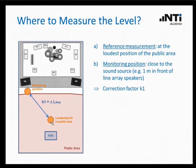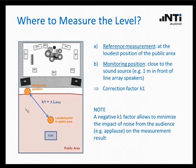All these measurements and calculations are automatically executed by the XL2 — the recording of the sound level at each position, calculating the K1, and applying K1 to the measurement result. It could be that the K1 factor is negative — don't be concerned about that, it is absolutely fine. A negative K1 factor simply means the sound at your measuring position is higher than at the loudest point of the public area, which gives you confirmation that crowd noise will not have a big impact on your measurement result.